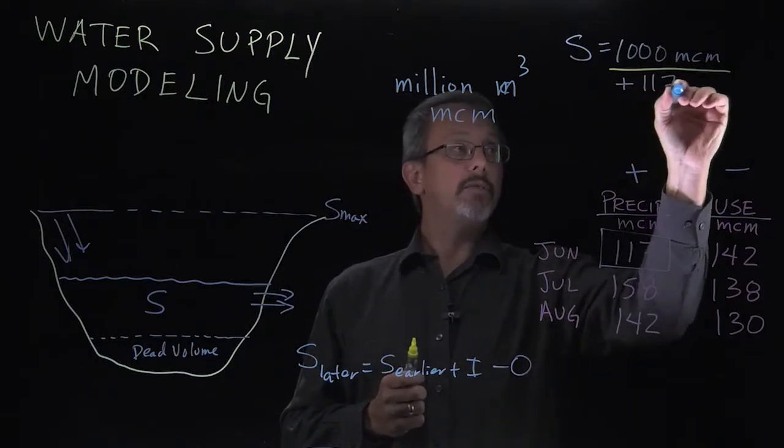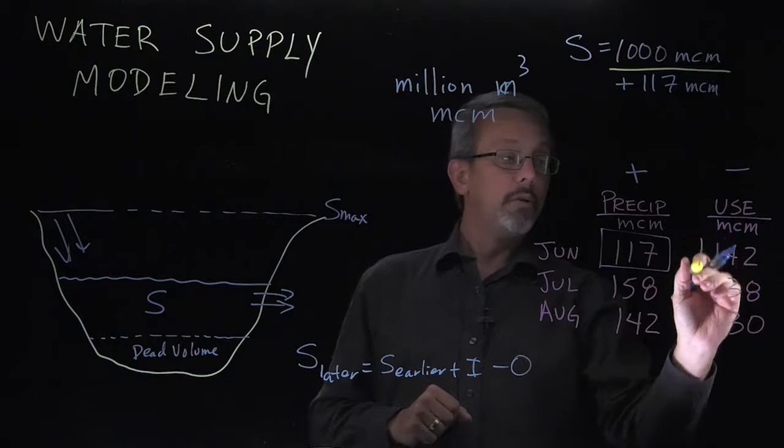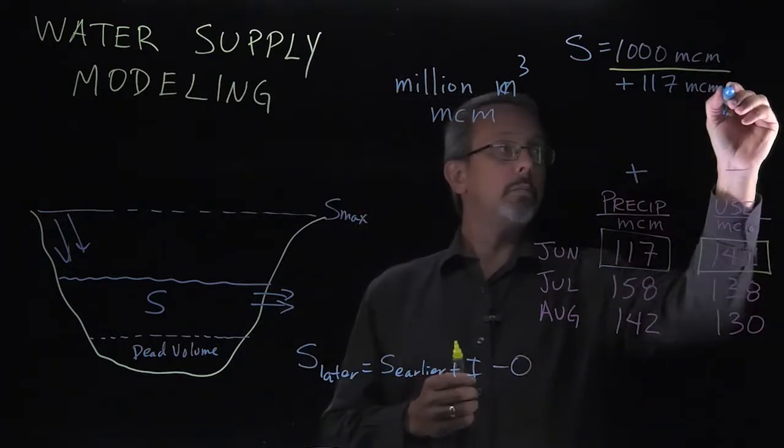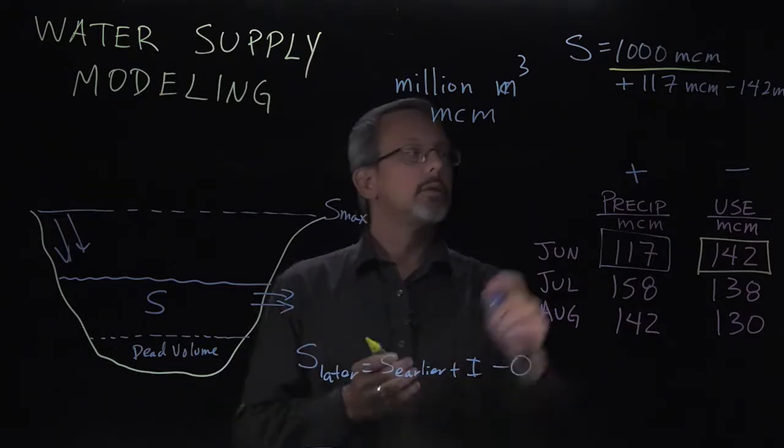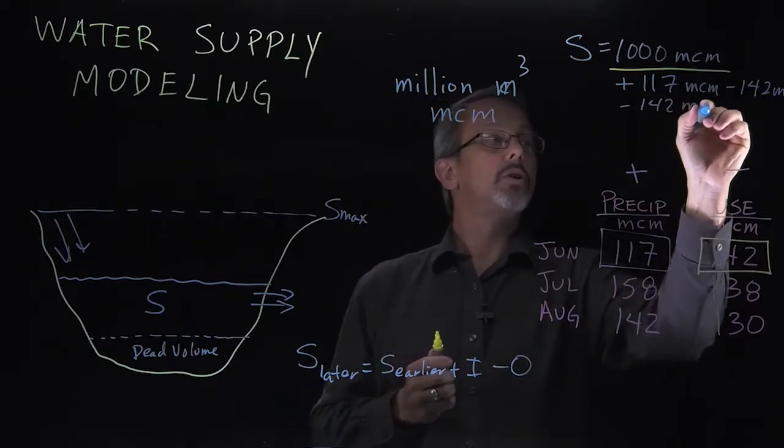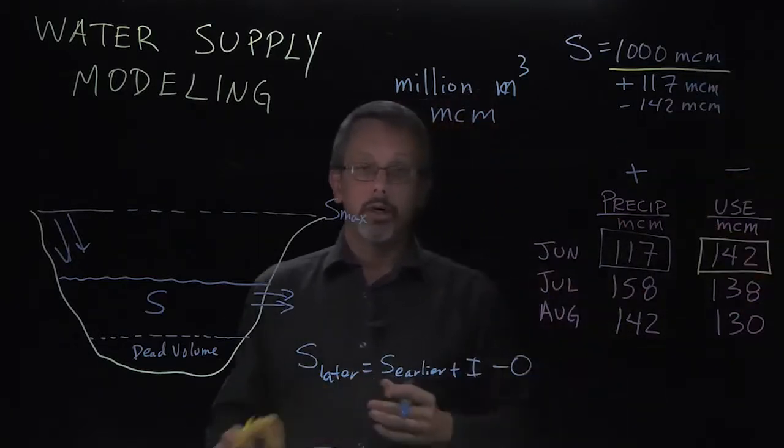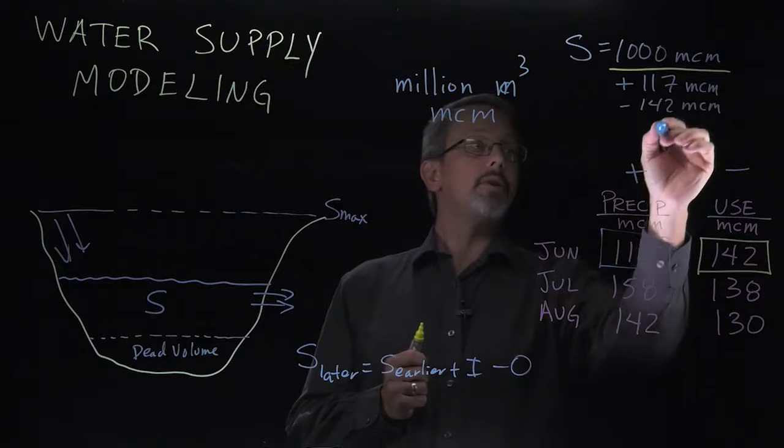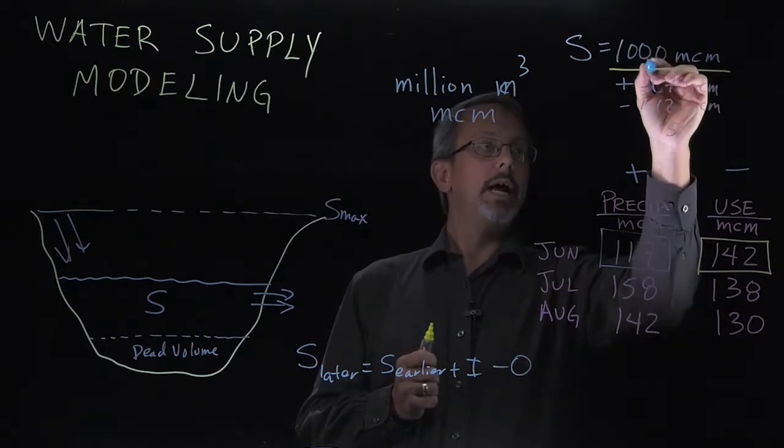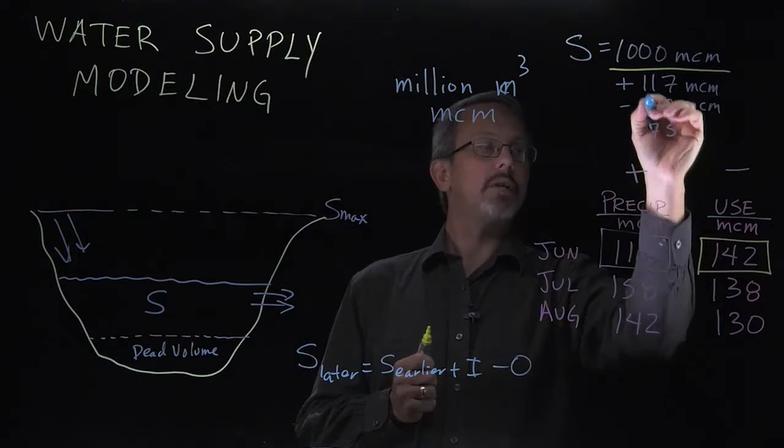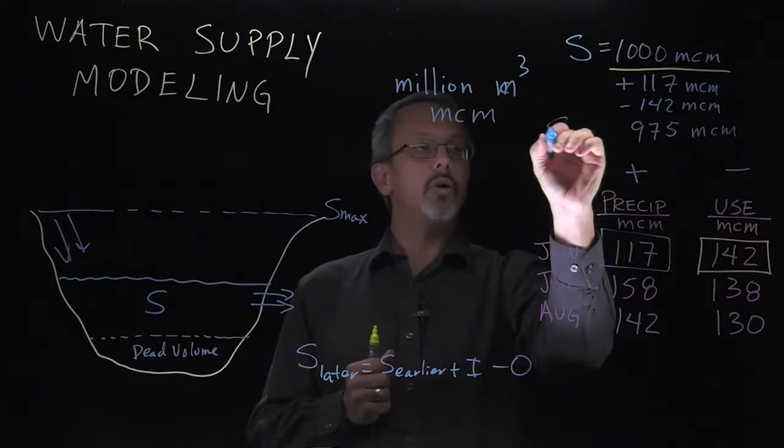So we can add our 117 MCM. But at the same time, we're expecting that there's quite a bit of use that's occurring at this time from the nearby municipality of 142 minus 142 million cubic meters. Notice that net amount is going to result in us having less storage over our time period. So 1000 plus 117 minus 142, that's going to give us around 975 MCM. And that's going to be our storage at the end of June. Notice that is a reduction in the amount of storage.